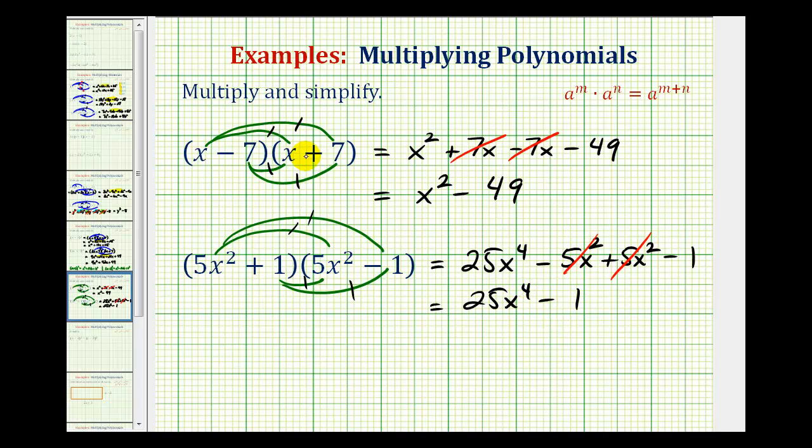Both of these products were special because the binomials are called conjugates of one another, meaning one of them was in the form of a plus b, and the other was in the form of a minus b. When we have two binomials that fit this form, their product will always be a squared minus b squared.